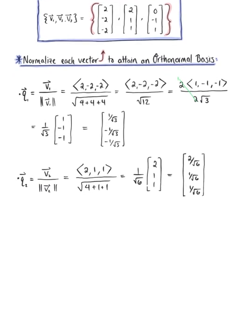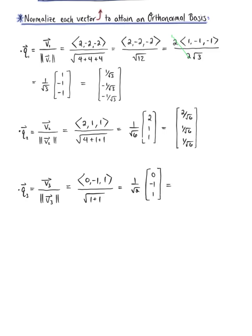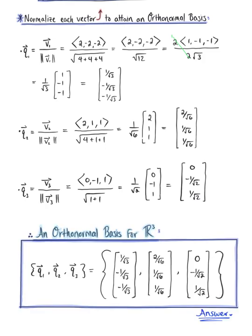Last but certainly not least, we normalize vector v₃, letting this be vector q₃, equal to v₃ divided by the magnitude of v₃. Vector v₃ is (0, -1, 1), divided by its magnitude, the square root of 1 + 1. So our scalar multiple is 1/√2 times (0, -1, 1), leaving us with the vector (0, -1/√2, 1/√2). An orthonormal basis for R³ is the set of vectors q₁, q₂, and q₃ — a set of orthogonal unit vectors and our final answer.